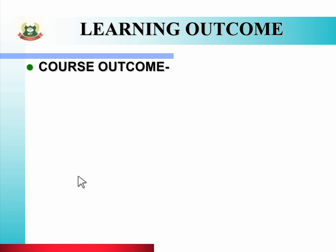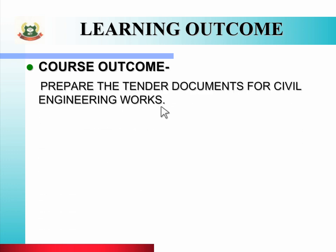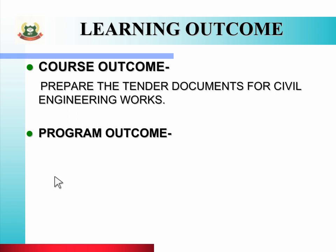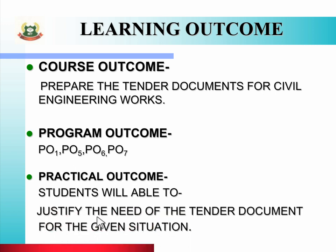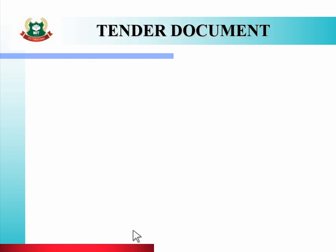First, we will look at the course outcome: Prepare the tender documents for civil engineering works. After this practical, you will be able to make a tender document for civil engineering work. The related program outcomes are PO-1, PO-5, PO-6, and PO-7. The practical outcome is: students will be able to justify the need of the tender document for the given situation.